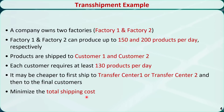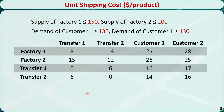In this table, we summarize the unit shipping cost in dollars per product. From Factory 1 directly to Customer 1, the cost is 25. From Factory 1 to Transfer 1, the cost is 8, and from Transfer 1 to Customer 1, it is 16, so the total cost is 24, which is cheaper than directly shipping from Factory 1 to Customer 1. From Factory 1 to Transfer 2, the cost is 13, and from Transfer 2 to Customer 1, it is 14, so the total cost is 27, which is more expensive than directly shipping. Therefore, we need to determine how many products should be shipped from each factory to each customer and how we should use the Transfer Centers.